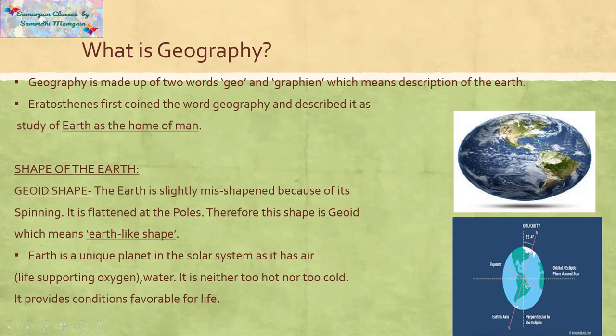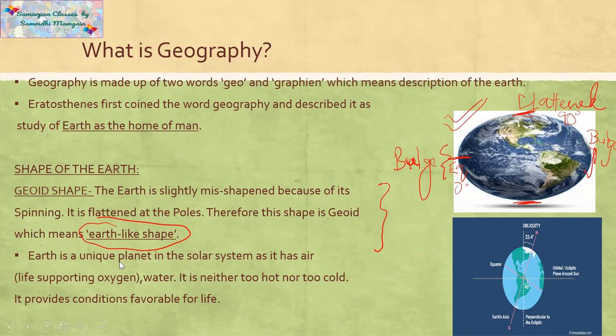In the real sense, the shape of Earth is unique. It is flattened at the poles. Therefore, this shape is called the Earth-like shape. Now the next point is Earth is a unique planet.